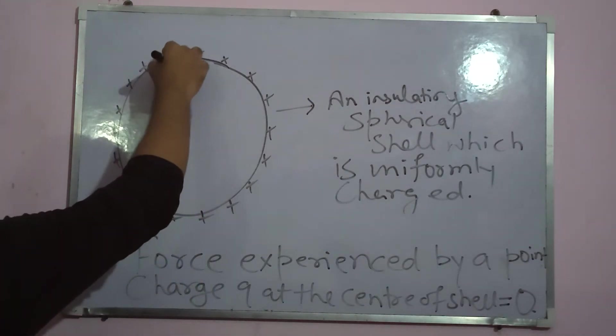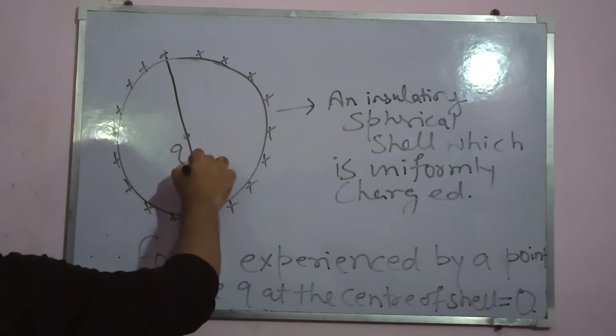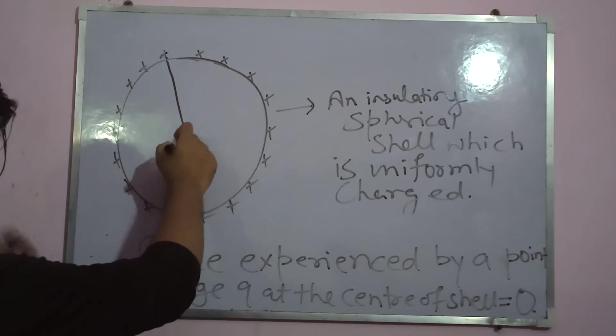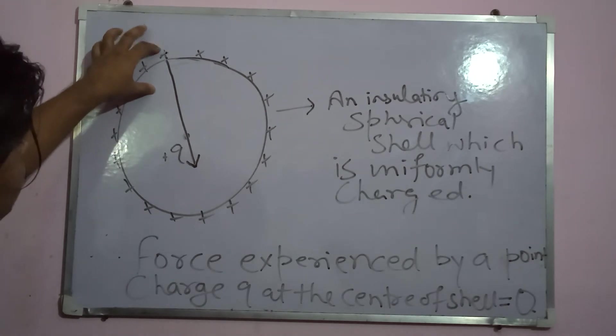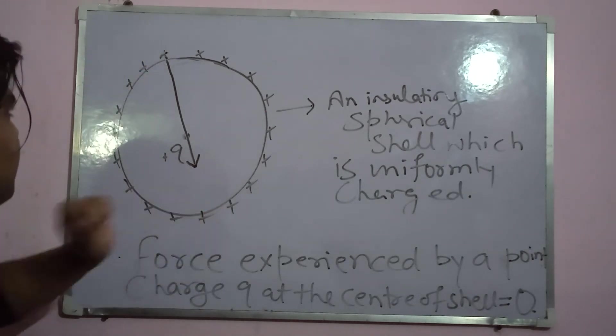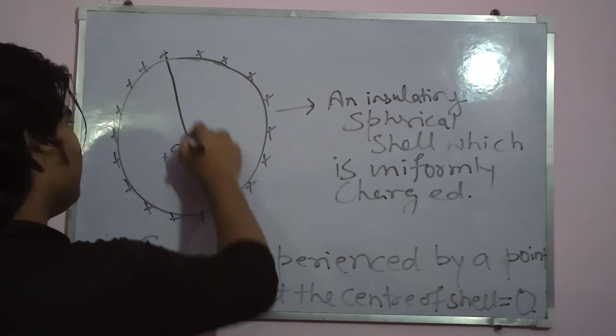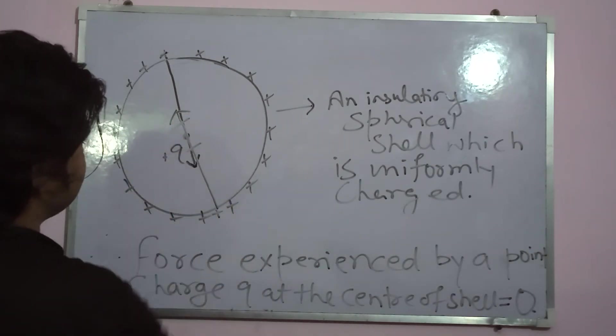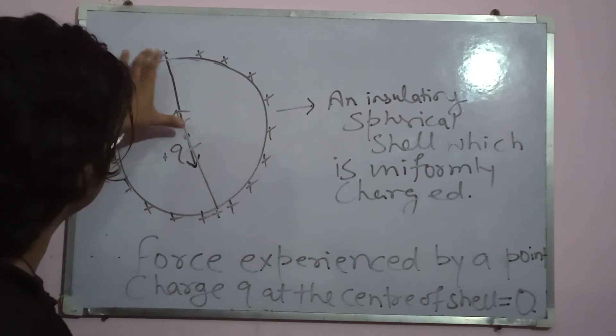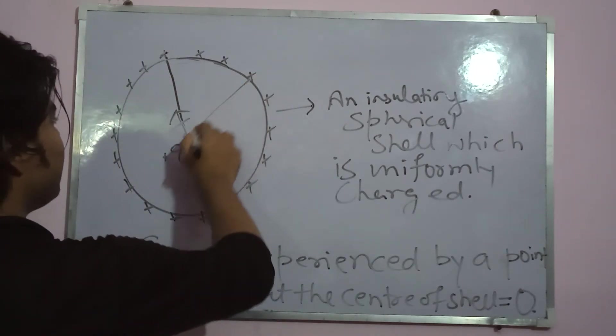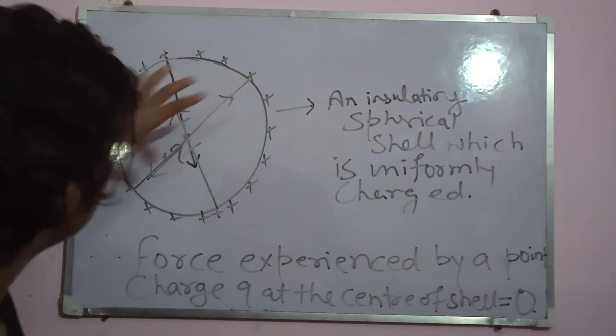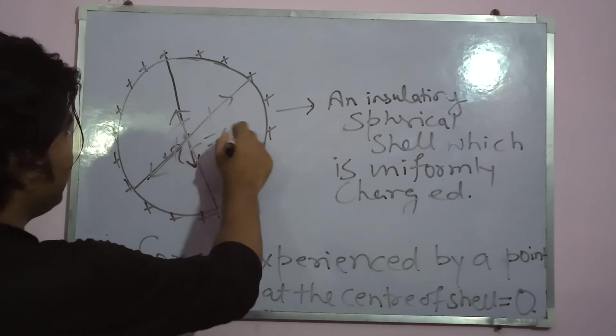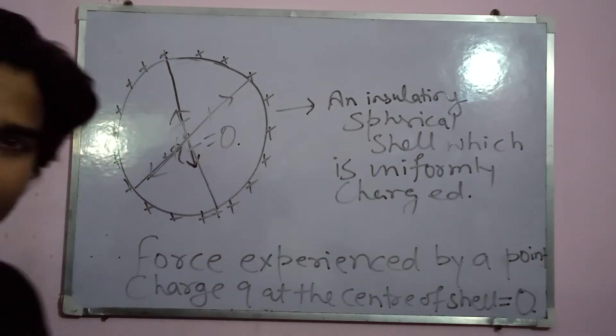When I take a point charge over the surface of a sphere, there's a repelling force over this plus Q. And there's a symmetrically opposite point of this point charge taken over the surface. This also repels it. These two forces cancel because distances are the same, magnitudes are the same. Similarly, each and every point has symmetrically opposite charge over the surface of a sphere and that cancels the force. At the center is zero.